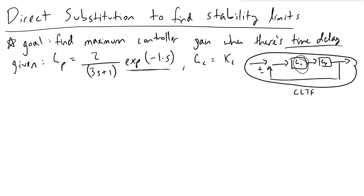We're going to start out by looking at the characteristic equation. Based on our closed loop transfer function, we know that our characteristic equation will have the form 1 plus product of all transfer functions, which in this case will be Gc times Gp.